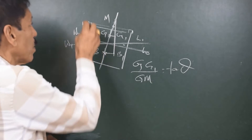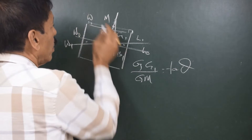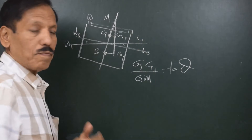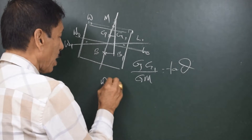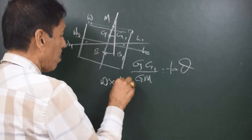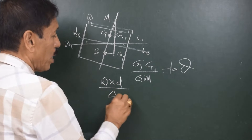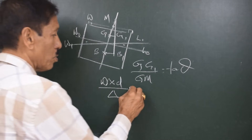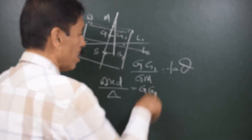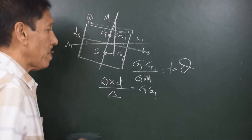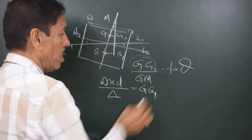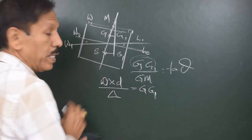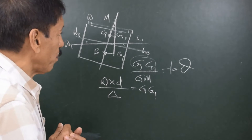Now, talking about the weight W which is shifted over a distance d, we can say that W multiplied by d divided by the displacement of the ship is equal to GG1. That means this GG1 in the formula comes from W, d, and the displacement of the ship.